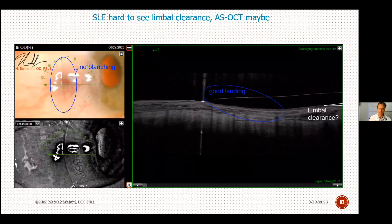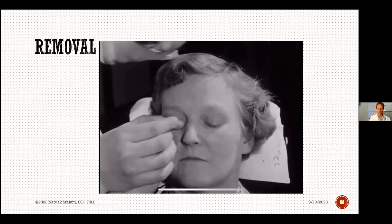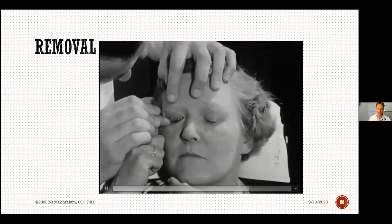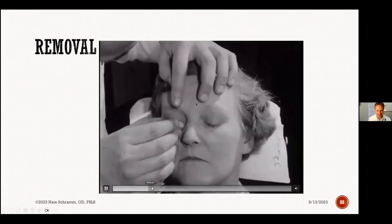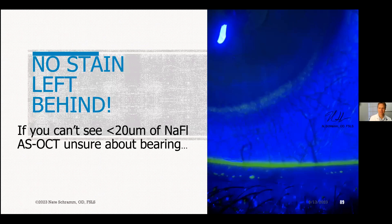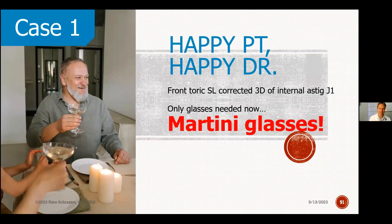This is my pterygium case. There's a removal technique I haven't tried yet — the practitioner places a finger on the upper lid, rolls it across about 180 degrees, and pops the lens off. No stain left behind — we look for staining after wear at follow-up visits, since you can only see to about 20 microns with fluorescein. For the case with internal astigmatism, we had to put a front toric with three diopters. Fortunately, we were able to get it to line up properly and stay stable — so he's now J1 out of his right eye and 20/20 out of the left. The only glasses he needs now are martini glasses.